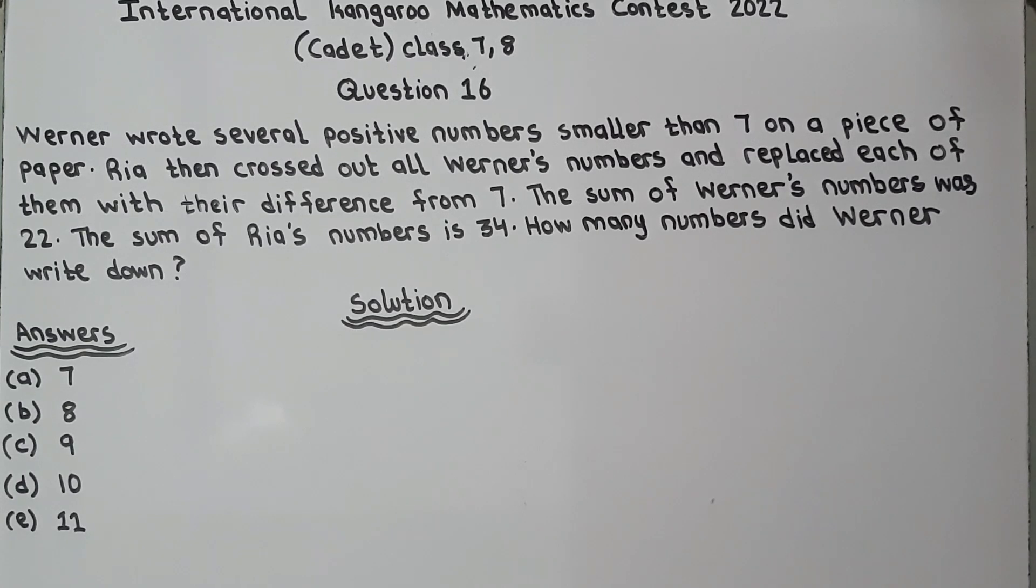The sum of Werner's numbers was 22 and the sum of Ria's numbers was 34. So they are asking how many numbers did Werner write down?